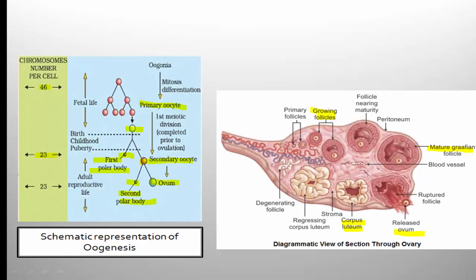The egg develops inside the follicle cell; when development is completed, the mature follicle is called the graafian follicle, and the egg is released at the secondary oocyte stage. So when ovulation is completed, the egg released from the graafian follicle is in the secondary oocyte stage.